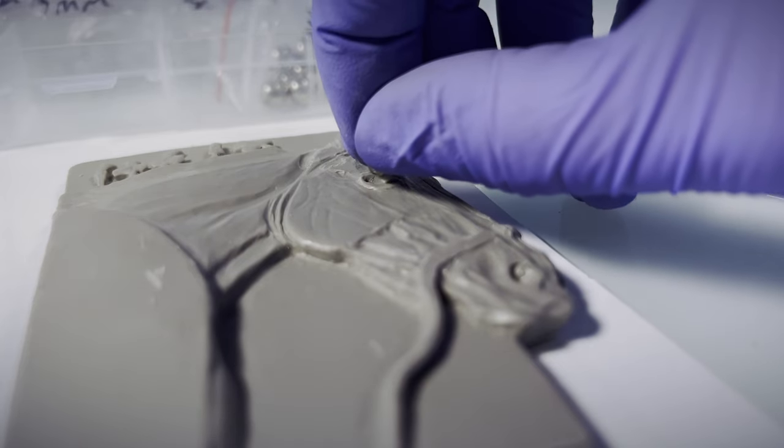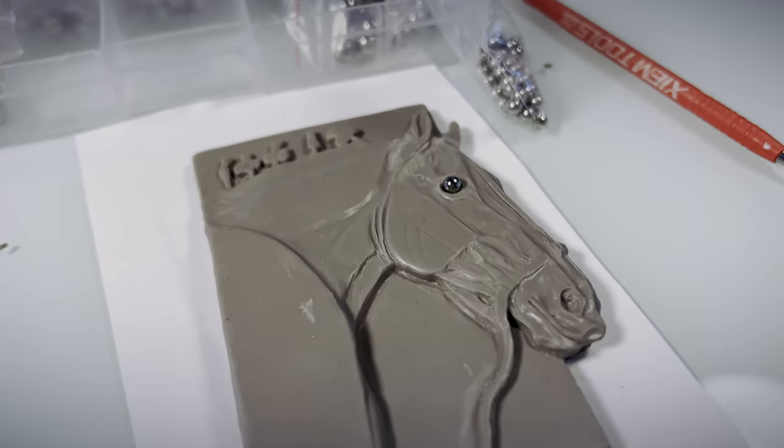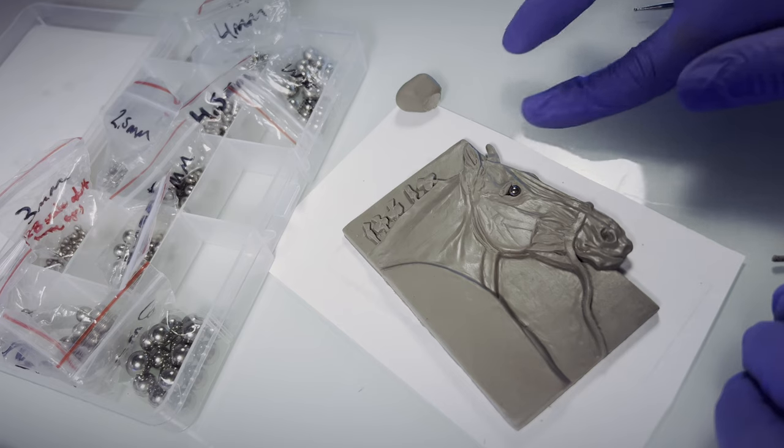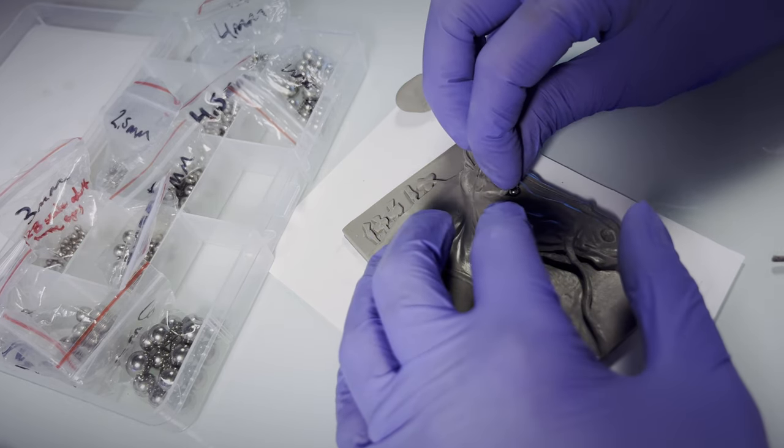I'm regularly asked on Instagram what I use for the silver eyes, and they are just steel ball bearings in assorted sizes, a little tip I learned from countless other sculptors.